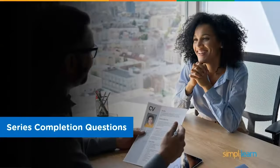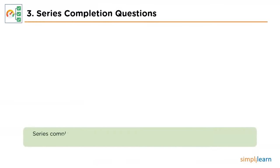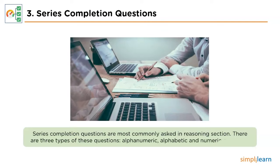Let's move to the next category, that is Series Completion Questions. In this section, the candidate is tasked with recognizing a pattern in a given set of numbers or letters. Then they'll have to pick an option that follows the same pattern, or identify the term that does not match the logic of the given sequence. There are three types: alphanumeric, alphabetic and numeric sequences.